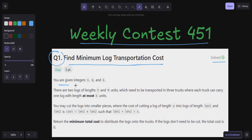You are given integers n, m, and k. There are two logs of length n and m units which need to be transported in three trucks, where each truck can carry one log with length at most k units. You may cut the logs into smaller pieces.